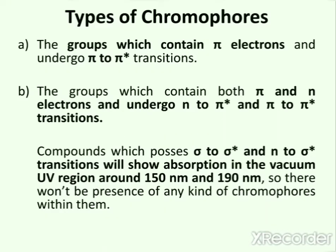Now a question arises: why are compounds containing sigma electrons not in the types of chromophores? Compounds containing sigma electrons are compounds having single bonds. They undergo sigma to sigma anti-bonding transitions, where sigma is the ground state and sigma anti-bonding is the excited state. Because these transitions show absorption in the vacuum UV region around 150 to 190 nanometers, there will not be presence of any kind of chromophores within them.